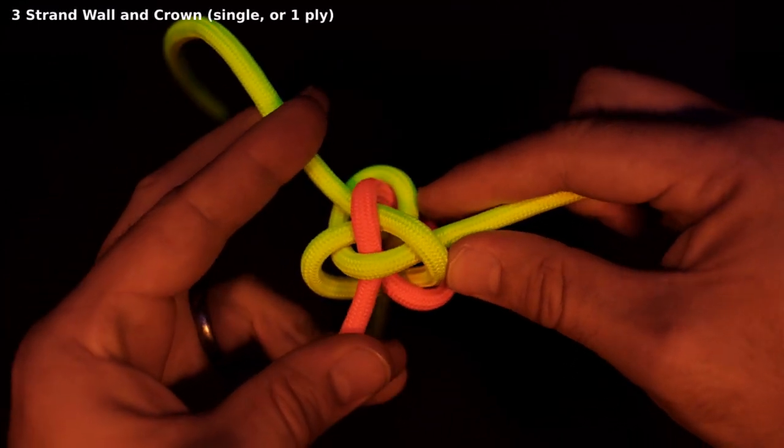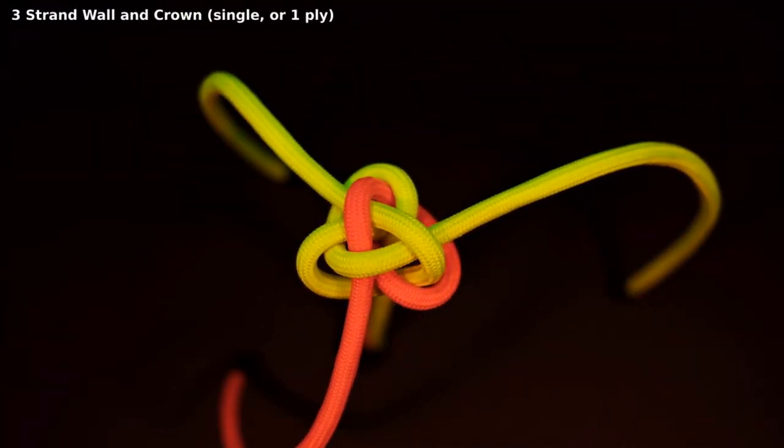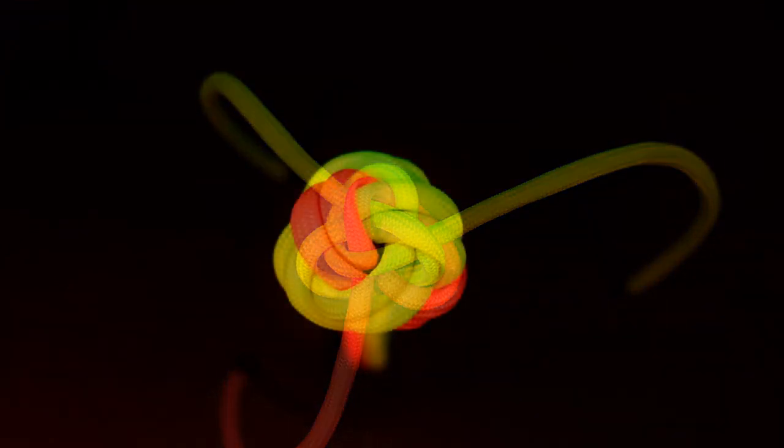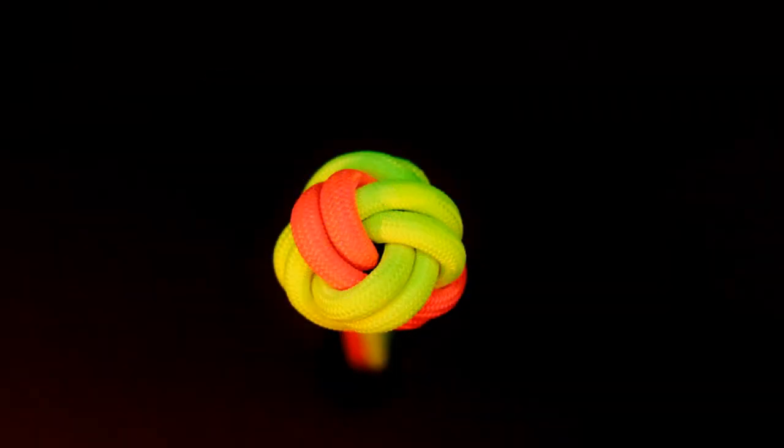This is a single wall and crown, the first walnut of its kind. We can enlarge the knot by doubling the strands, which also makes it stronger.